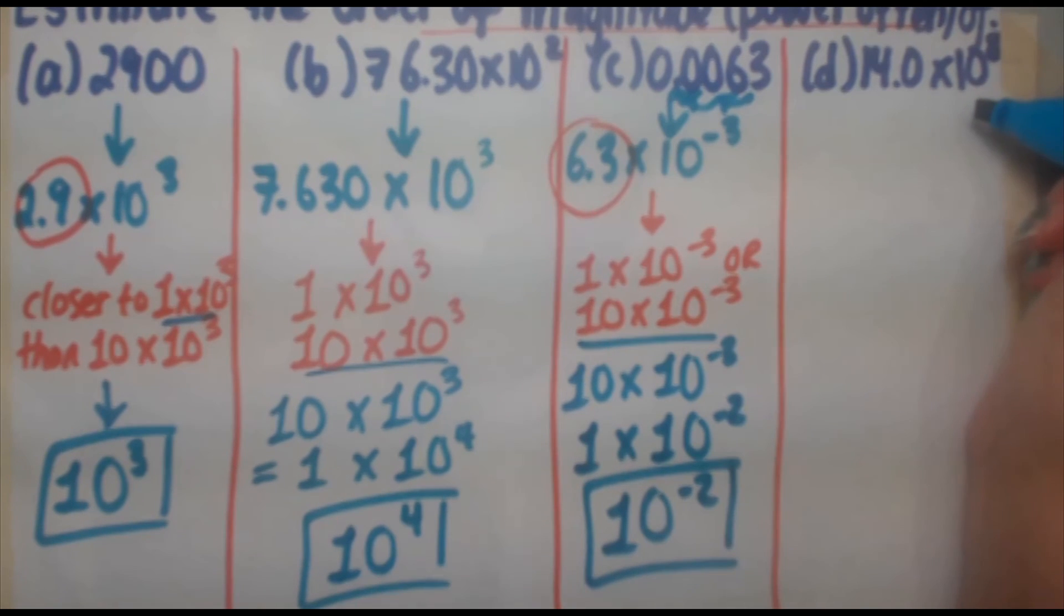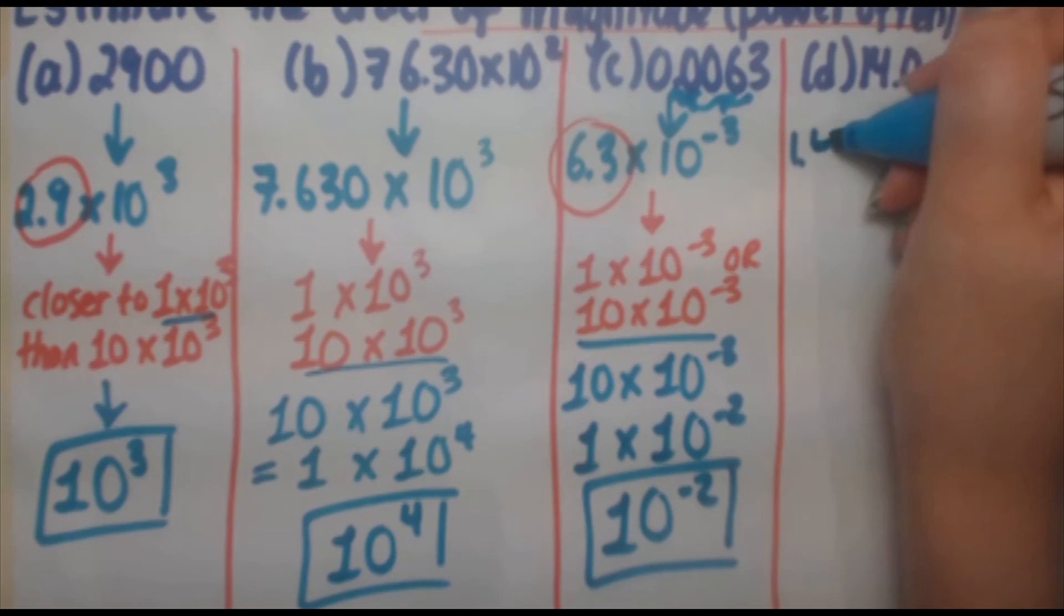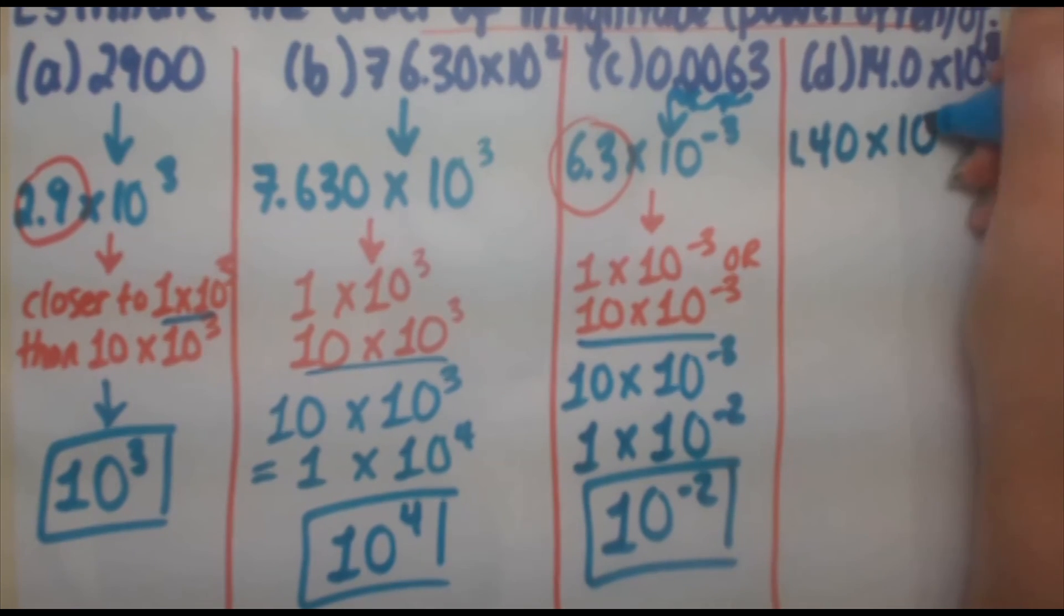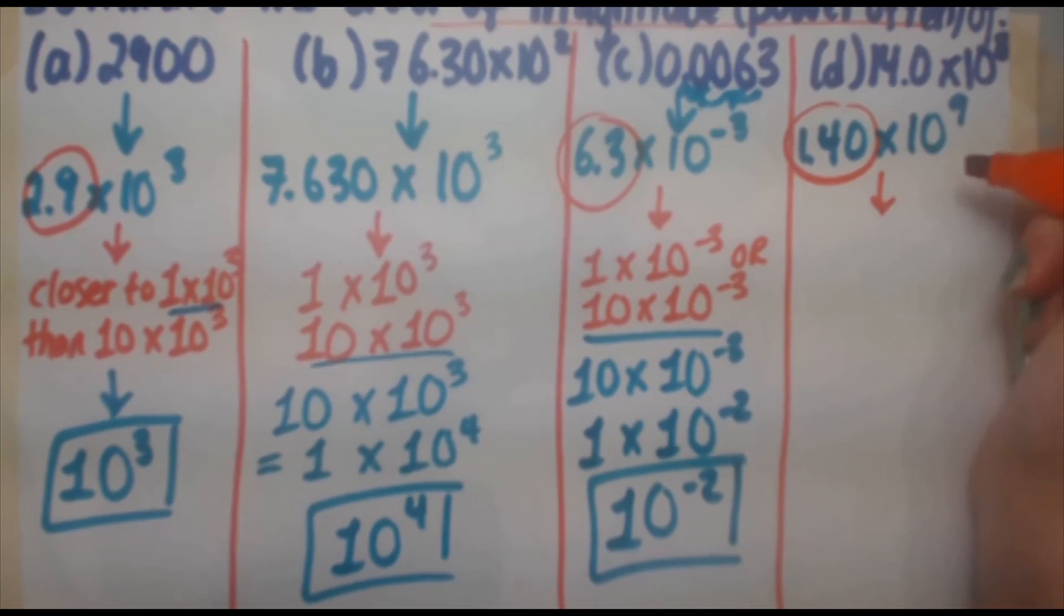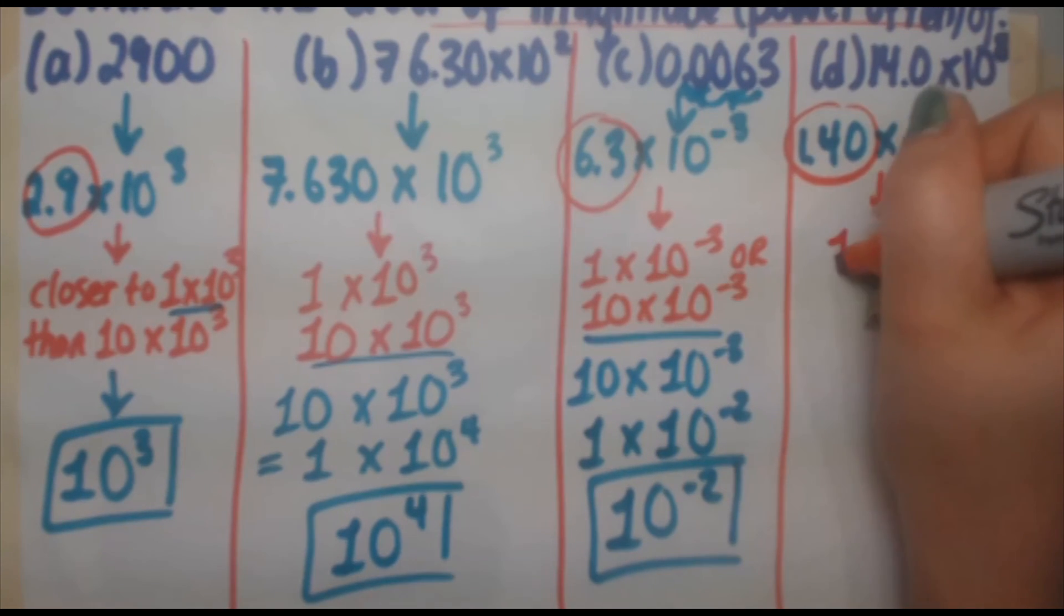And finally, we come to 14.0 times 10 to the 8. Same thing as the previous ones. Write it with the first number between 1 and 10, not including 10. So you get 1.40 times 10 to the 9. Taking a look at that first number there, we want to ask ourselves, which boundary is it closer to? Is it closer to 1 times 10 to the 9 or 10 times 10 to the 9?